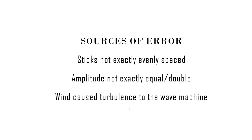In conclusion, some sources of error in the lab include: 1. Sticks on the wave machine may not be exactly evenly spaced. 2. The amplitude used for each experiment may not be exactly equal. 3. Wind may have caused turbulence to the wave machine.